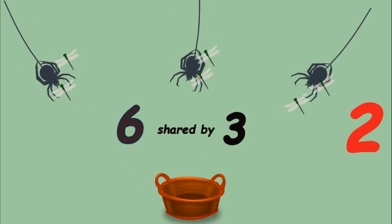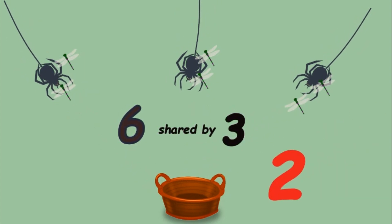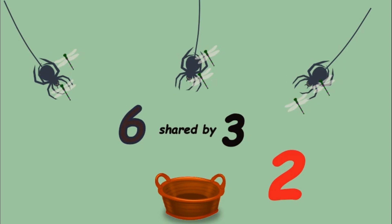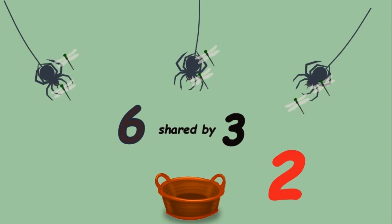Each spider has two flies, so six shared by three equals two.